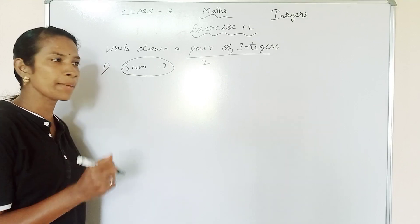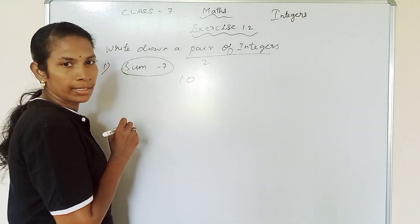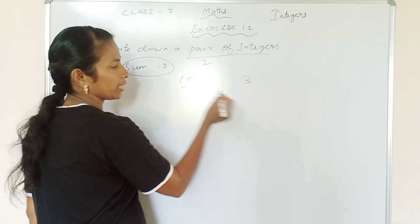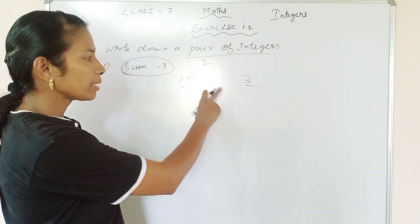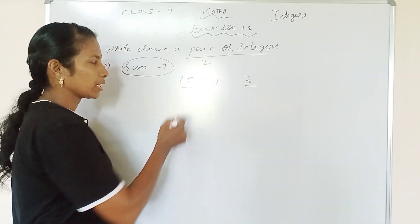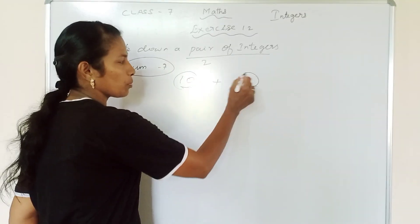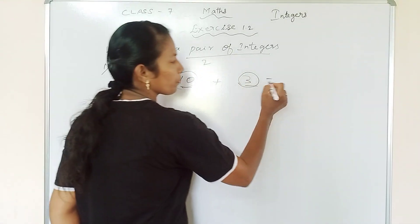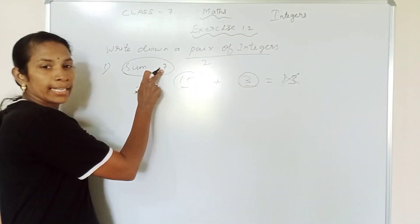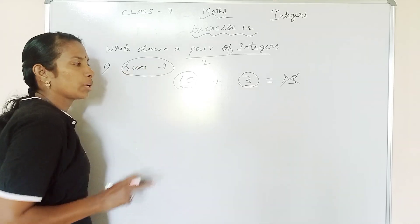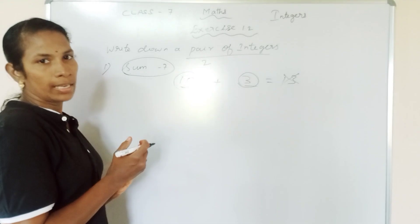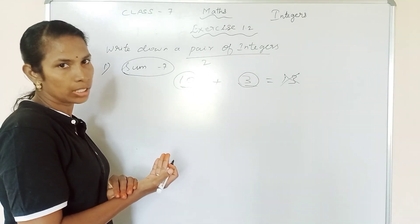Let's look at an example: 10 and 3. We have two integers — this is a positive integer and this is a positive integer. What do we need to do? We need to find their sum. Sum means plus, so 10 plus 3 equals 13. But the answer we need is minus 7. So we need to change the sign of the integers.